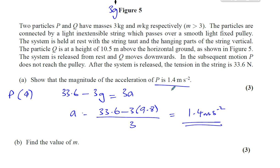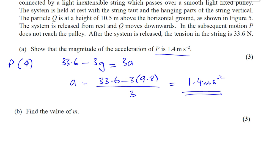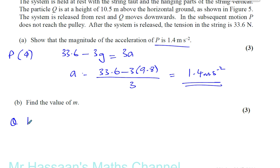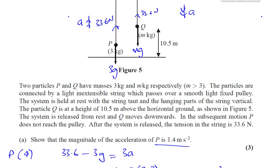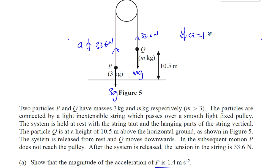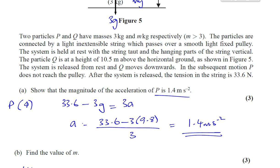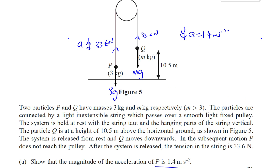Then it says find the value of M. So now we know the acceleration, let's consider Q. Q is accelerating downwards. We know that the acceleration is 1.4 meters per second squared. Now for this, it's going to be moving downwards.